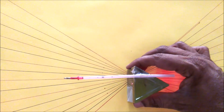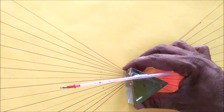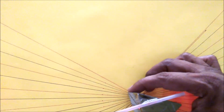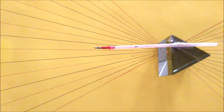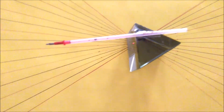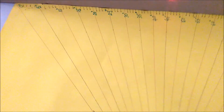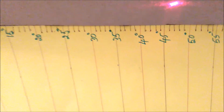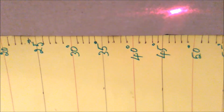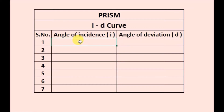Now the prism position is adjusted for an angle of incidence of 30 degrees — the pointer is aligned along the red line. For this angle of incidence of 30 degrees, the angle of deviation is 47 degrees. Note down these values in the table. Now adjust the position of the prism for 35 degrees; for this angle of incidence of 35 degrees, the angle of deviation is 41 degrees.